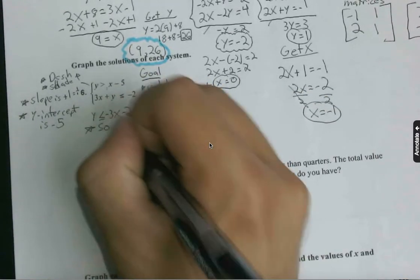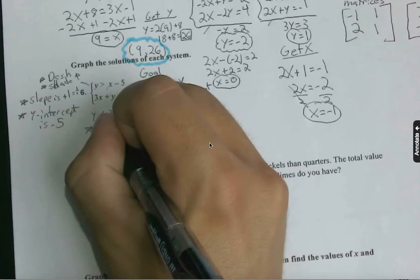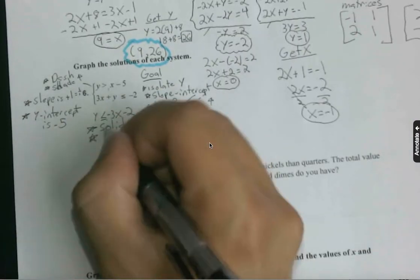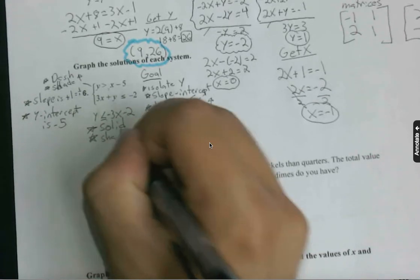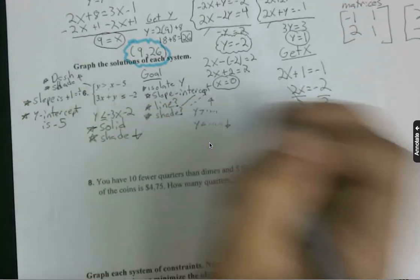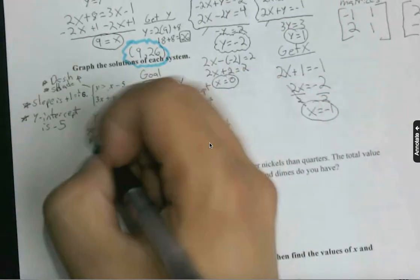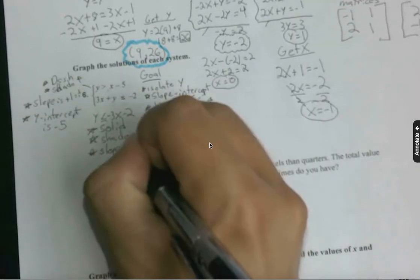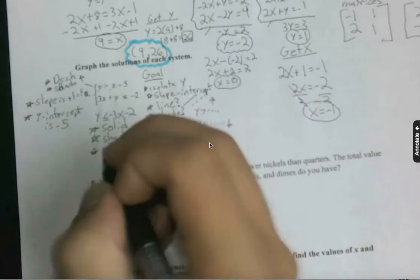So this is definitely going to be a solid line because it's equal to, that's the key factor. We're shading below, and slope's negative 3, and our y-intercept's negative 2, which I'll just denote as B.